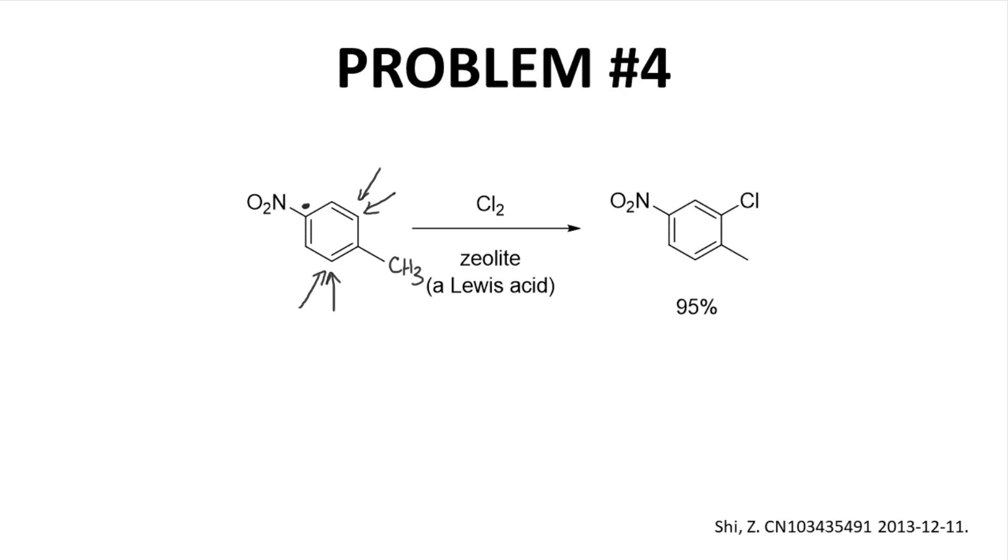Before leaving this question, I'll comment on the Lewis acid for the reaction. The zeolite. Zeolites are porous, often powdered glass-like materials. The surface and pores of the material can act as a Lewis acid – a good enough Lewis acid to catalyze a chlorination reaction on an aromatic ring in this case.